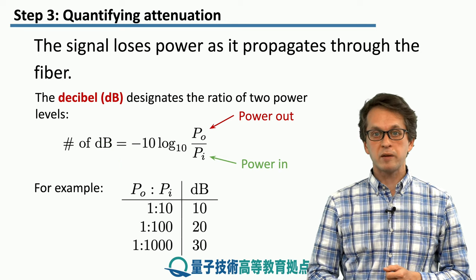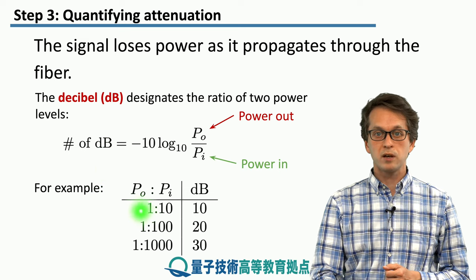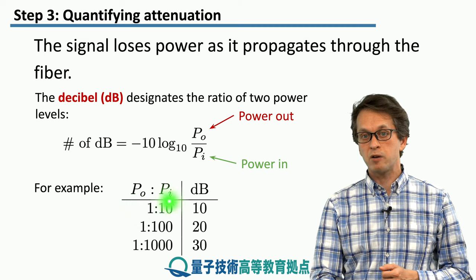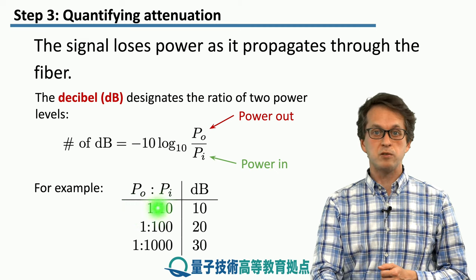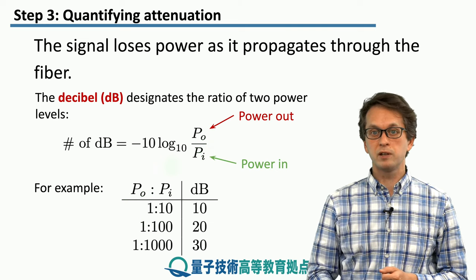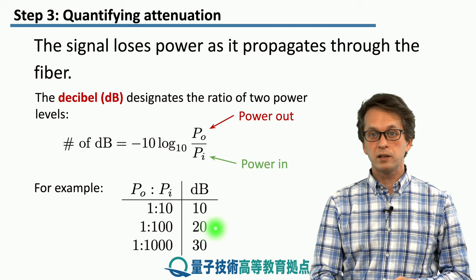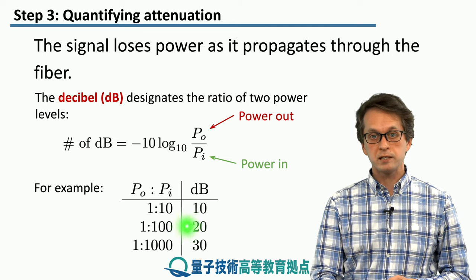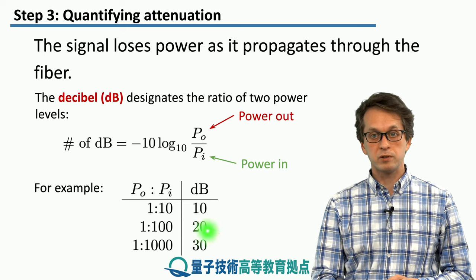For example, if we have a ratio of power out to power in of 1 to 10 — meaning 90% of the power becomes attenuated — this corresponds to 10 decibels, as you can verify by substituting P_out over P_in into the formula. If the ratio is 1 to 100, this corresponds to 20 decibels. If it's 1 to 1000, this corresponds to 30 decibels.